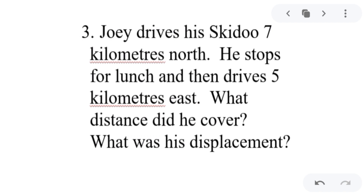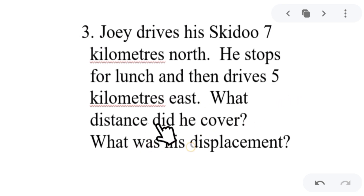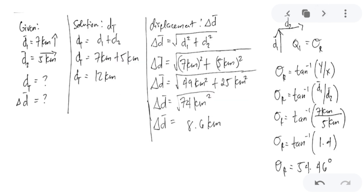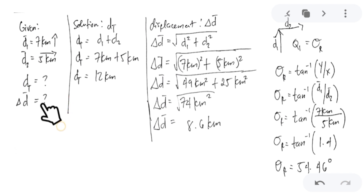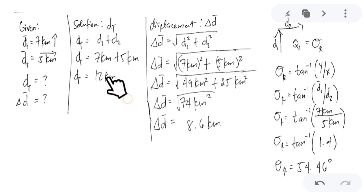Another sample problem: Joey drives his skittle 70 km north, stops for lunch, then drives 5 km east. What distance did he cover and what was his displacement? Given: first displacement is 7 km north, second displacement is 5 km east. For total distance, add the individual magnitudes disregarding direction: 7 km plus 5 km equals 12 km. To find the displacement, since this is perpendicular, we use the Pythagorean theorem.